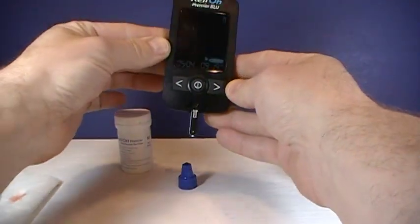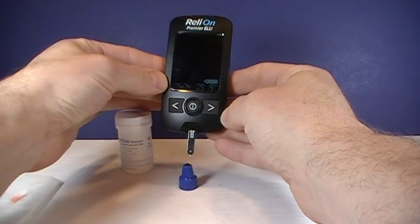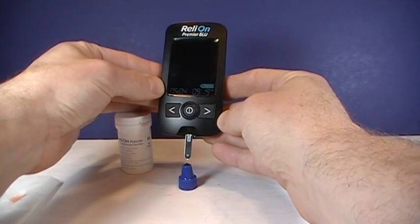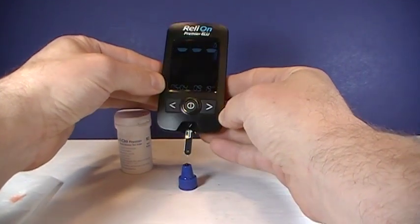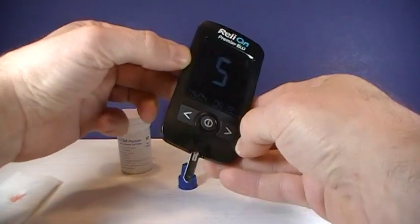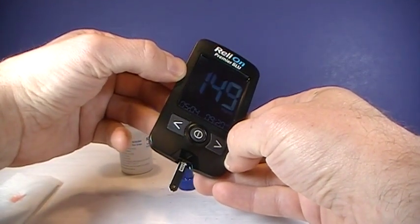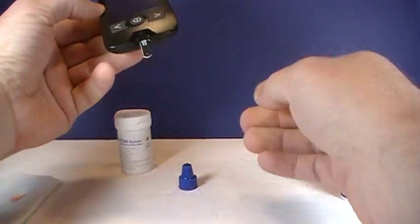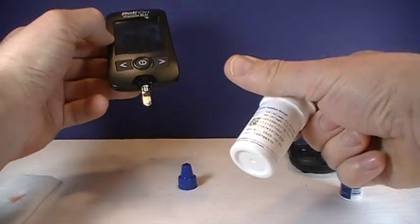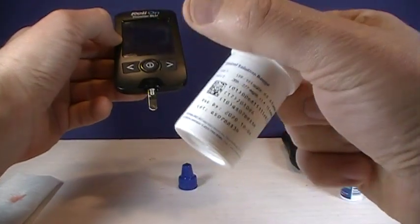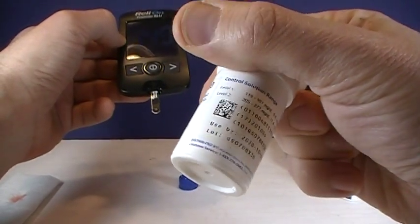Now again you would typically discard the first drop or two but we already have some control solution so we'll just use that. There we go, 149. So that again falls within the acceptable range for this vial of test strips for control solution level one.